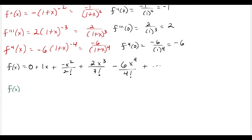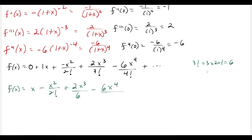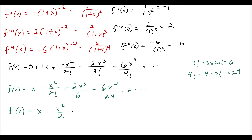Now we simplify. We have x minus x squared over 2 factorial plus 2x cubed over 3 factorial. Since 3 factorial is 6, this simplifies to x cubed over 3. Then minus 6x to the fourth over 4 factorial — since 4 factorial is 24, this gives minus x to the fourth over 4. So simplified, we have x minus x squared over 2 plus x cubed over 3 minus x to the fourth over 4, and this pattern continues.